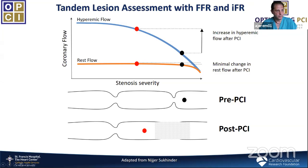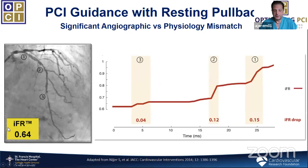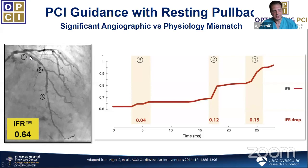In the case shown earlier, the surprising result was: lesion number three — looking most severe angiographically — only had 4 iFR points of pressure loss. Lesion number two had a loss of 12 points. The most significant lesion by physiology was actually the ostial stenosis, which angiographically may look least significant, because it supplies a huge amount of myocardium. Many would have treated lesions 2 and 3 based on angiography, but physiologically, lesions 1 and 2 should be treated.